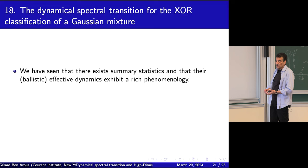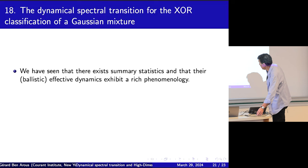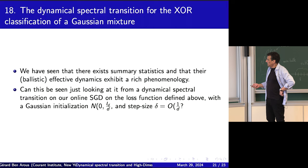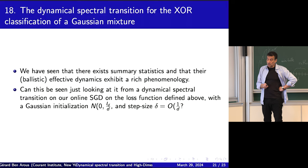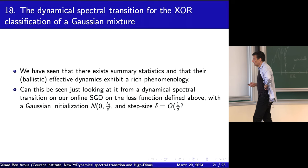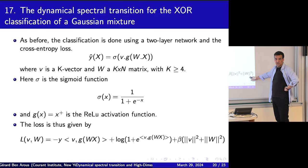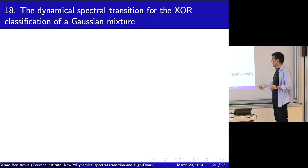We've seen that there exist natural summary statistics for the XOR problem and that their effective dynamics have a rich phenomenology. The question is: can this be seen just by looking at it from a dynamical spectral transition point of view? I have this loss function and I'm studying its SGD minimization.